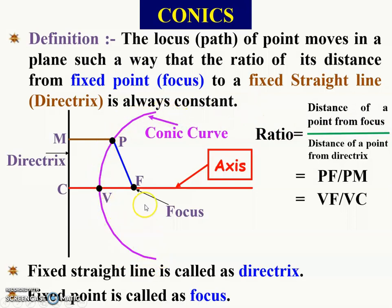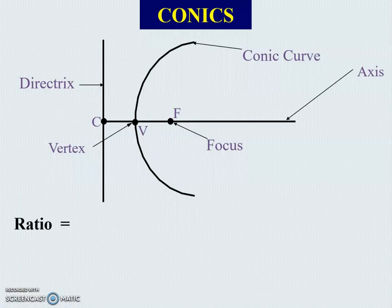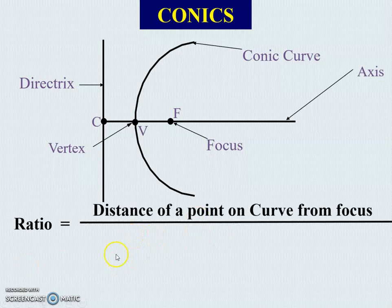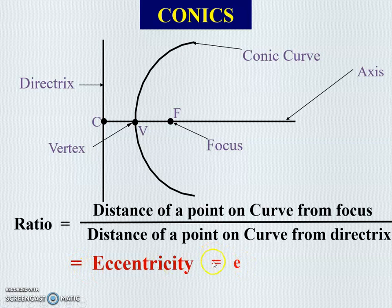This curve is known as conics or a conical curve. That ratio is known as the eccentricity, denoted by the symbol small e. The eccentricity is the distance of a point on a conical curve from the focus divided by the distance of that point from the directrix, and that equals small e.